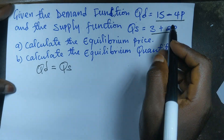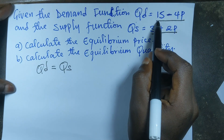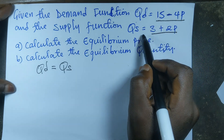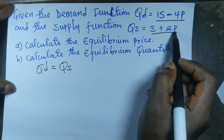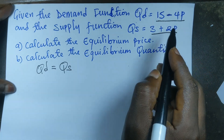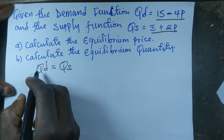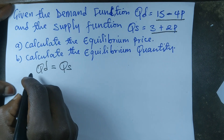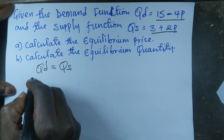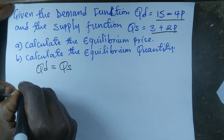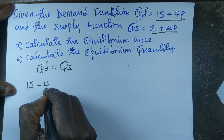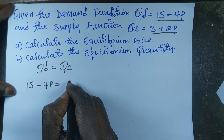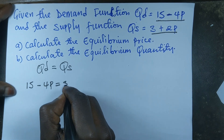Given that the demand function is 15 minus 4p and the supply function is 3 plus 2p, when we equate the demand function to the supply function we are going to have 15 minus 4p equal to 3 plus 2p.